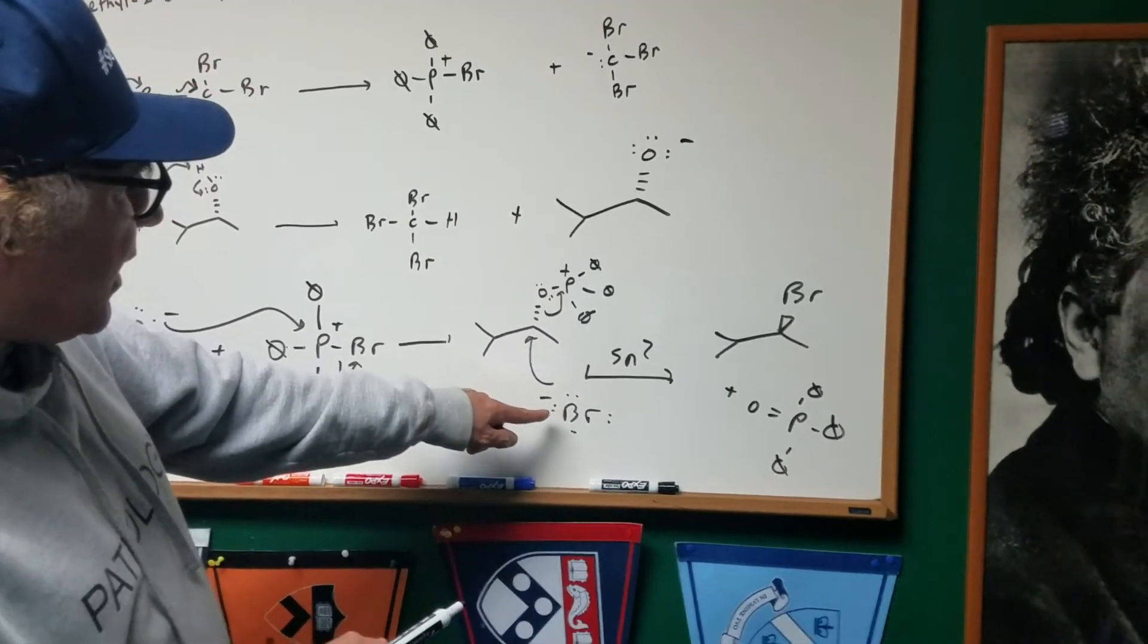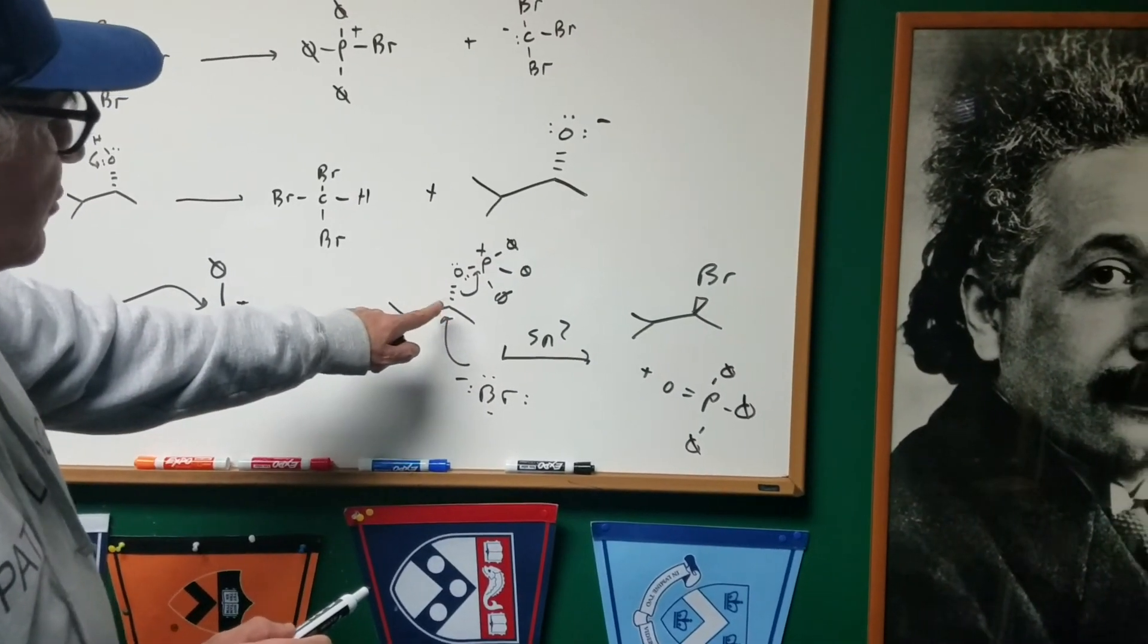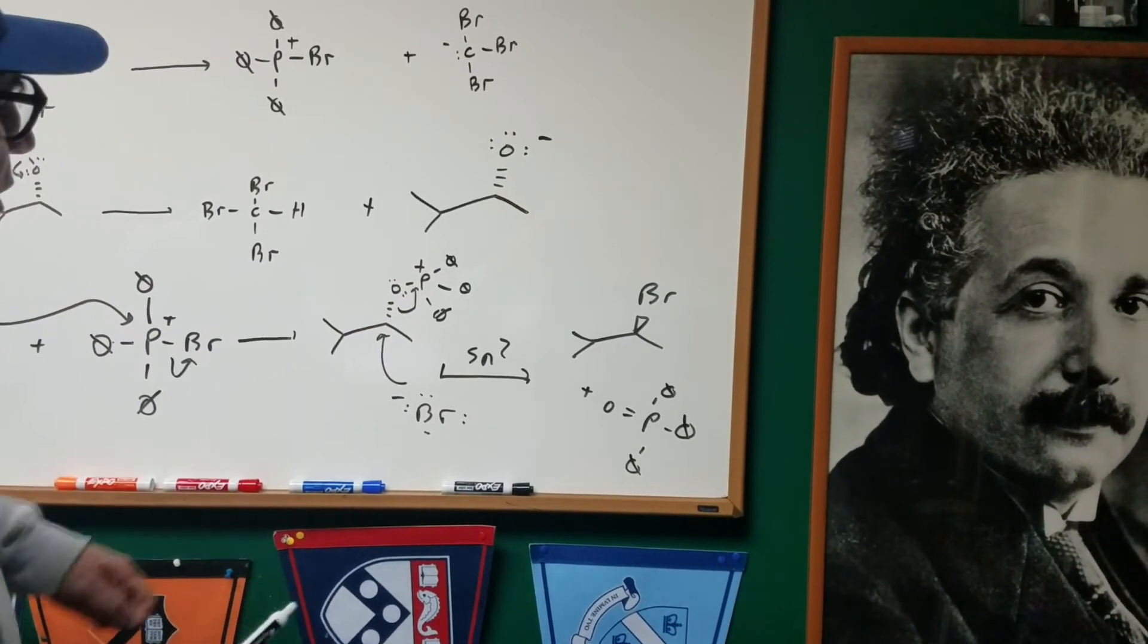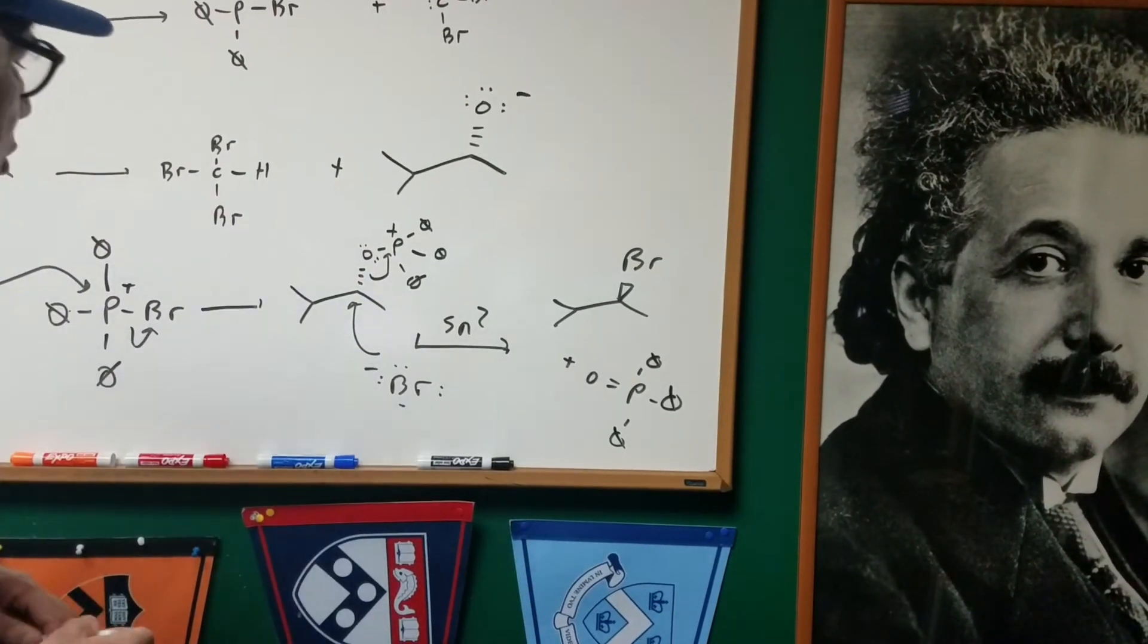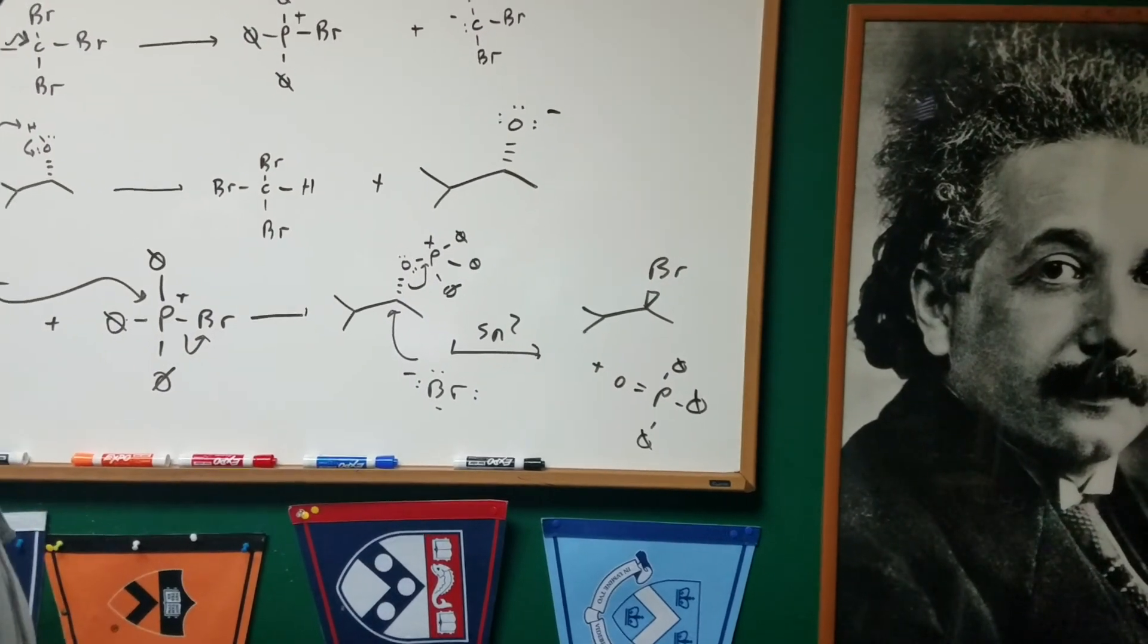Now the bromine comes back for the attack, does a backside SN2 to give us the inverted product, and of course, the byproduct, triphenylphosphine oxide.